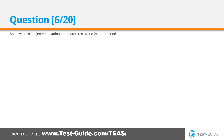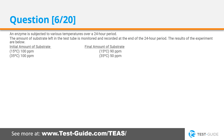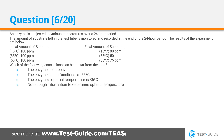Question 6. An enzyme is subjected to various temperatures over a 24-hour period. The amount of substrate left in the test tube is monitored and recorded at the end of the 24-hour period. The results of the experiment are shown below. Which of the following conclusions can be drawn from the data? The enzyme is defective. The enzyme is non-functional at 55 degrees Celsius. The enzyme's optimal temperature is 35 degrees Celsius. Not enough information to determine optimal temperature.